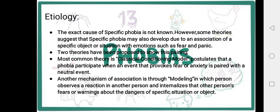The second theory is modeling, in which a person observes another person's reaction and internalizes that person's fears or warnings about danger. In modeling, the individual does not have to directly face the situation themselves — instead, they observe another person who has a phobia, see their negative experiences and consequences, and develop a phobia as a result.